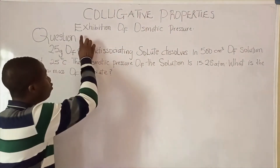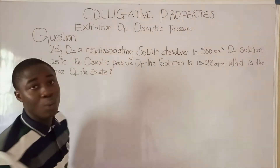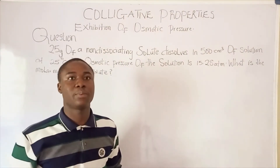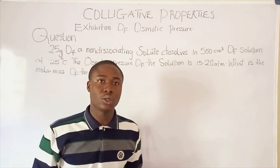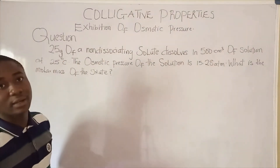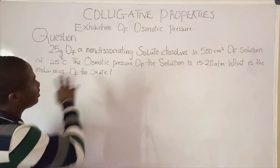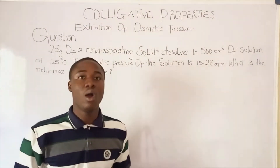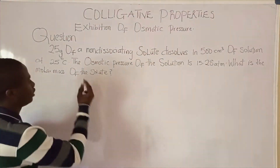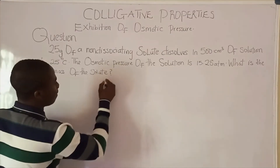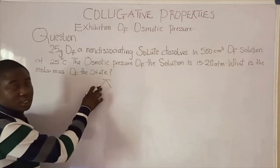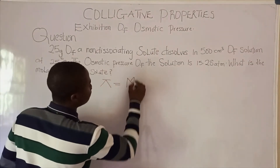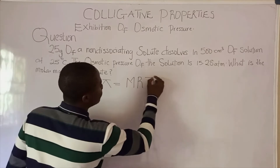In today's video lesson, we'll be focusing on one of the Colligative Properties which is called Exhibition of Osmotic Pressure. There are some calculation problems that must be noted on this aspect. To calculate the osmotic pressure of a solution, there is an equation: Pi equals N·R·T·i, where Pi is the osmotic pressure.